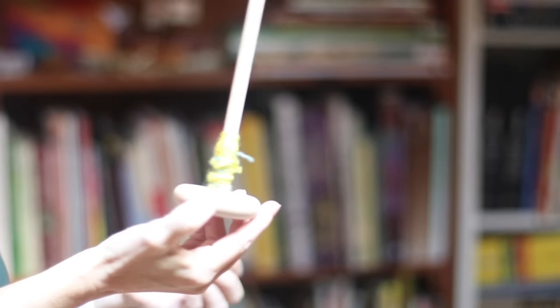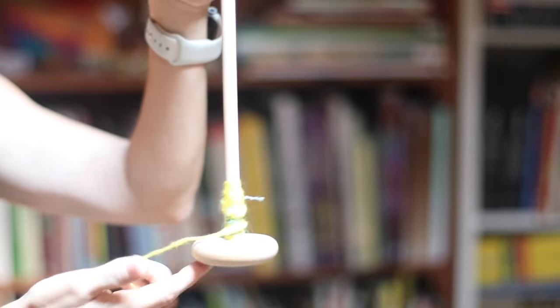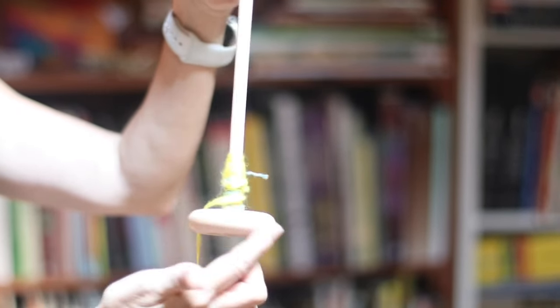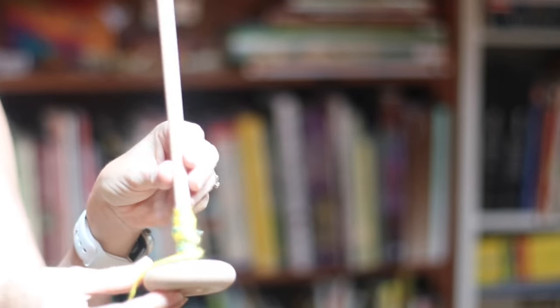We've been learning to spin and I was going to show you a little bit of how we do it. This is a spindle, I think it's a bottom drop spindle, and I think this could easily be made with some wooden projects.